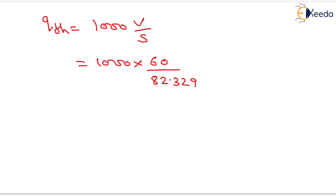it will be equal to 728.78. So we will write 728.78 vehicles per hour. That will be the Q theoretical.